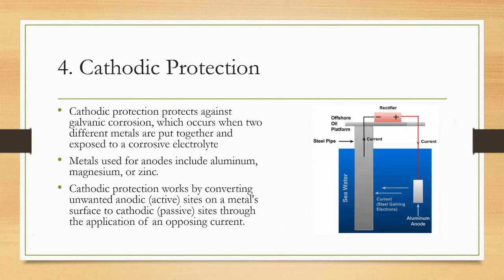Cathodic protection: It protects against galvanic corrosion which occurs when two different metals are put together and exposed to a corrosive electrolyte. To prevent this, the active sites on the metal surface need to be converted to passive sites by providing electrons from another source, typically with galvanic anodes attached near the surface. Metals used for anodes include aluminum, magnesium, or zinc. It works by converting unwanted anodic sites on a metal surface to cathodic sites through the application of opposing current.